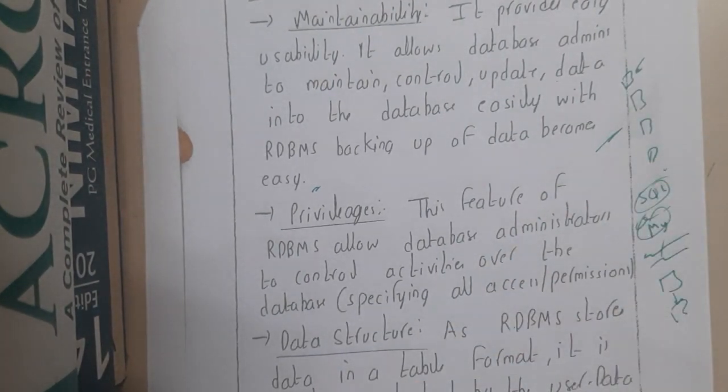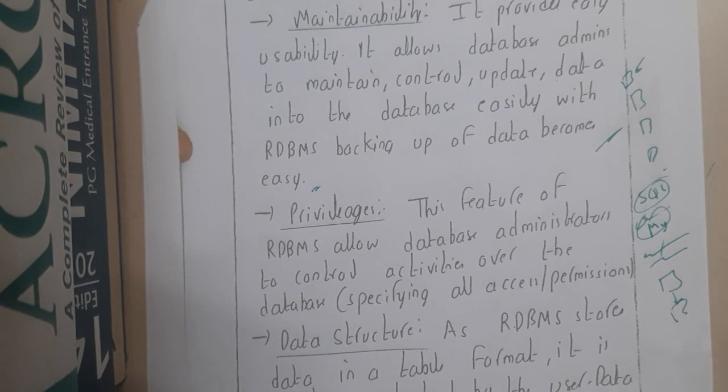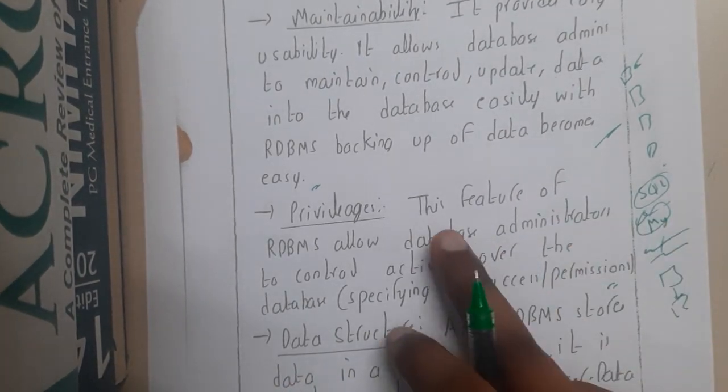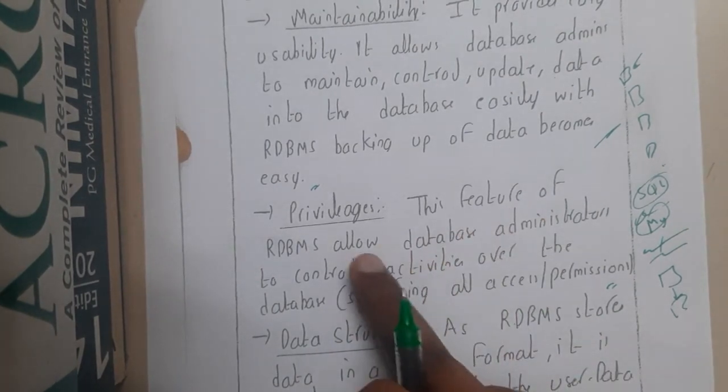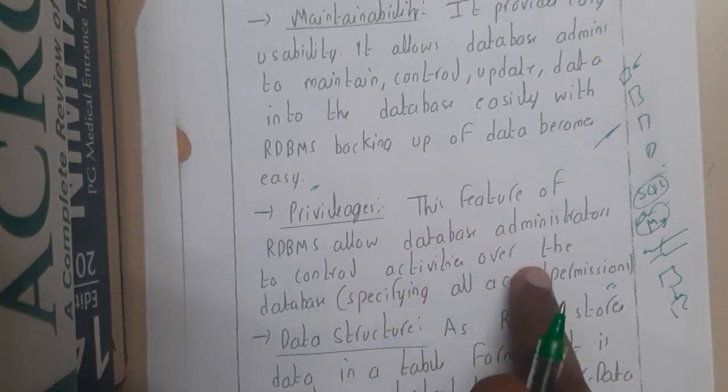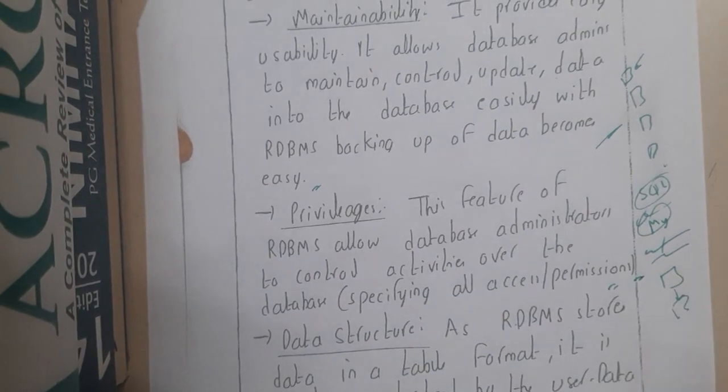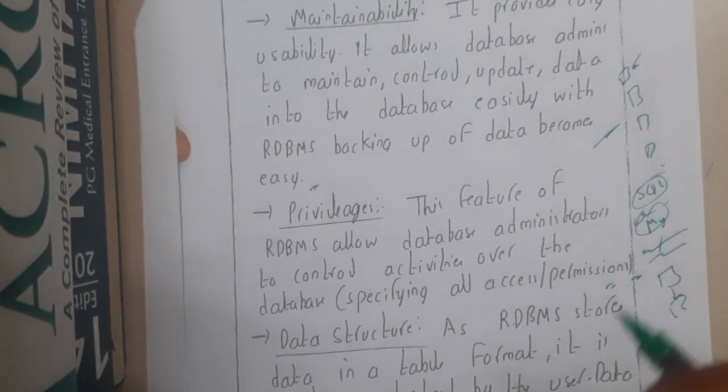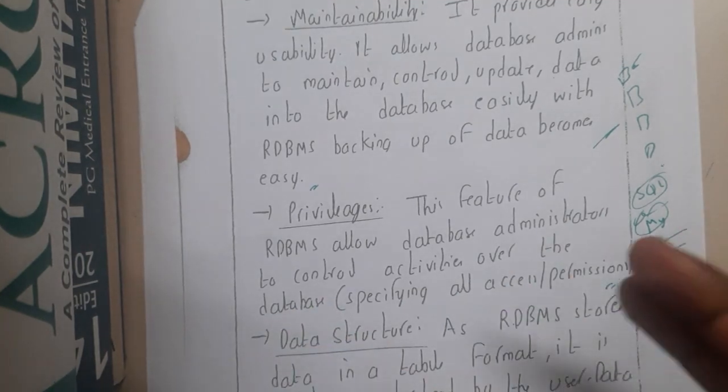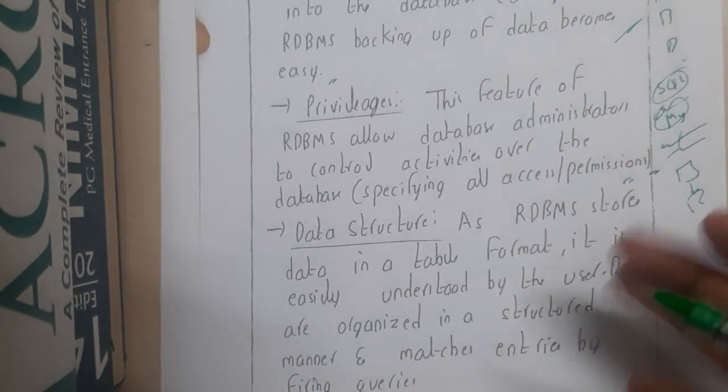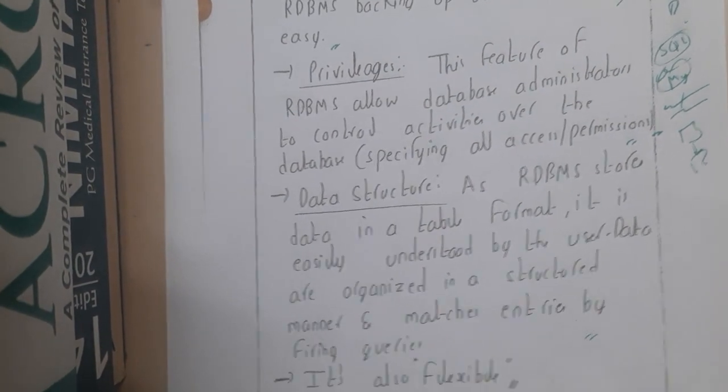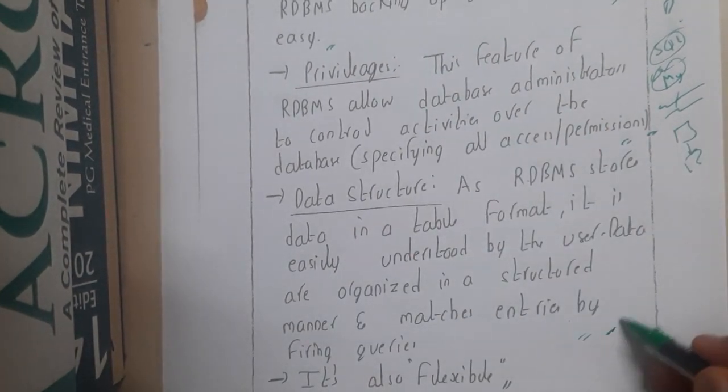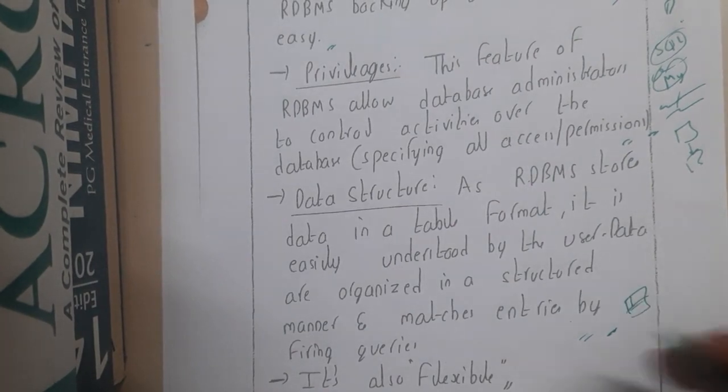The privileges feature of RDBMS allows database administrators to control activities over the database. We will be giving some permissions. The admin will assign these permissions, and whoever has permissions can easily access the databases and can modify also. That is one of the most major important things. Similarly, the data structure—we will be using it in terms of a table and filling it. It is also flexible.